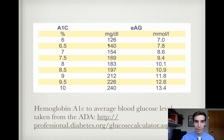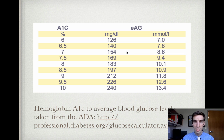Also from the American Diabetes Association, a hemoglobin A1c of 7% also correlates to an estimated average glucose of 154 milligrams per deciliter.